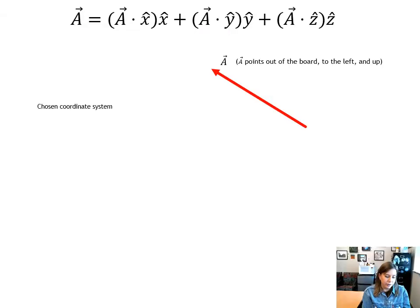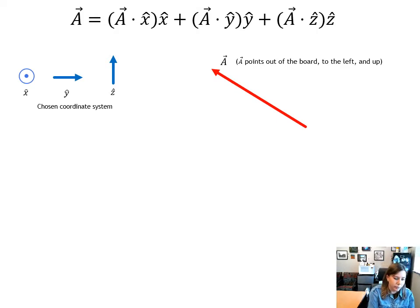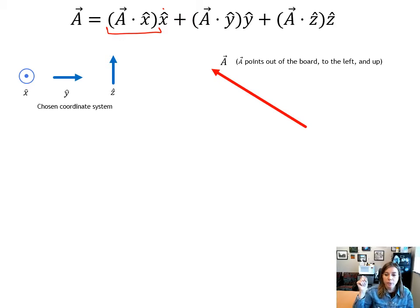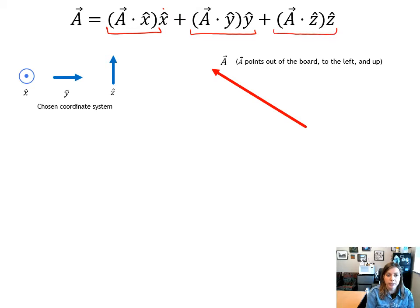The generic form of a vector in component form is written as a scalar component times a unit vector, making it a vector component. You sum it with the other vector components — the x direction vector component plus the y vector component plus the z direction vector component. Vector a is the sum of these components.